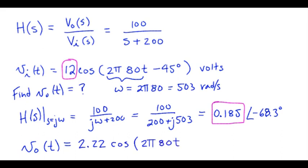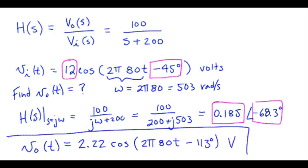Then to get the phase of the output, we take the original phase and add the phase shift that is produced by our circuit, our transfer function, and that gives us negative 113 degrees. And that's the solution that we need.